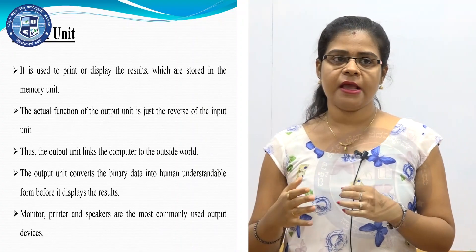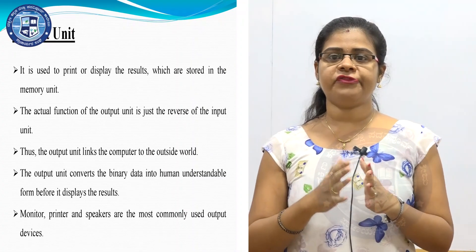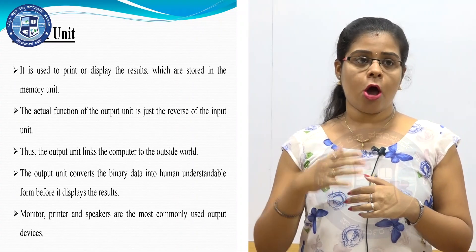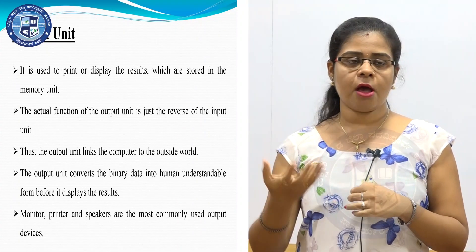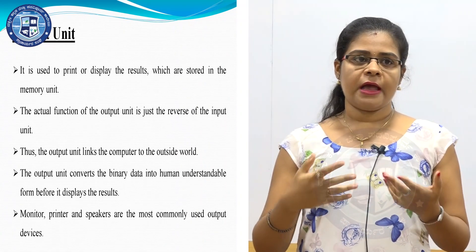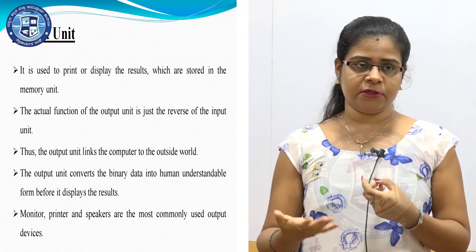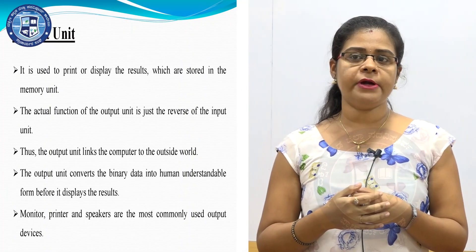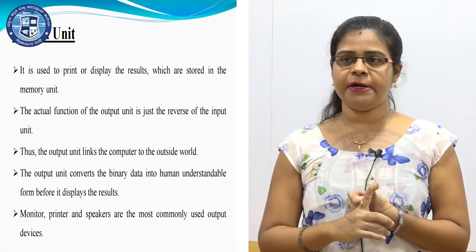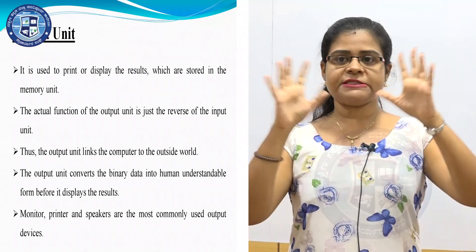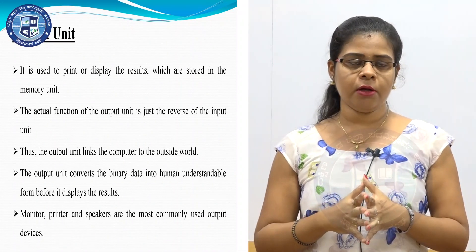Next is the output unit. The function of the output unit is to give results to the user or to print the output results. The output unit sends the results to the user using output devices such as printers, monitors, etc. This covers the block diagram of the computer which we studied in first PU.